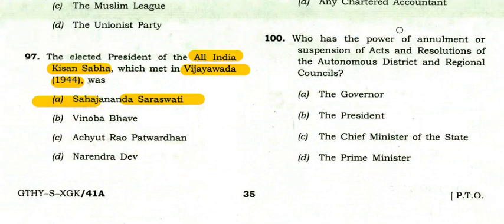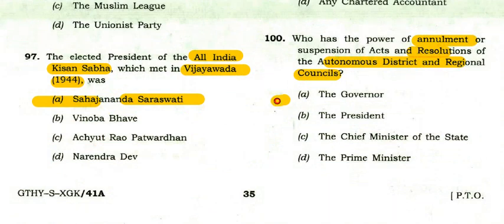Who has the power of annulment or suspension of acts and resolutions of the Autonomous District and Regional Council? Many questions from Autonomous District and Regional Councils appear in CDS. The power of annulment rests with the Governor.